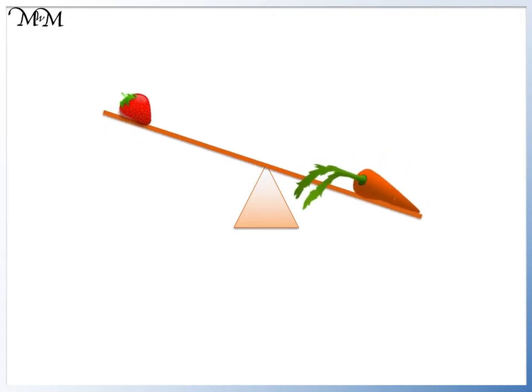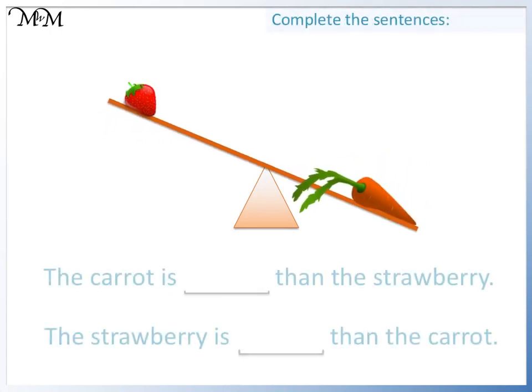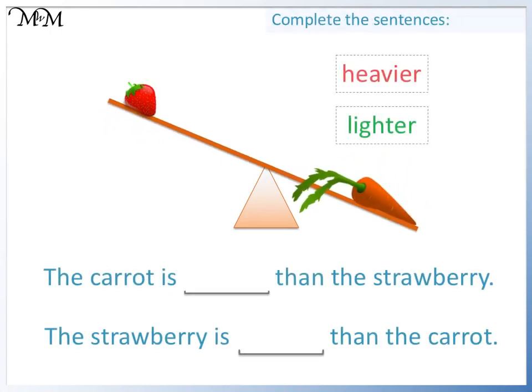Here is another example for you to try. Use the words heavier and lighter to describe the carrot and the strawberry. Pause the video and have a go. The carrot is below the strawberry. The carrot is heavier than the strawberry. And so the strawberry is lighter than the carrot.